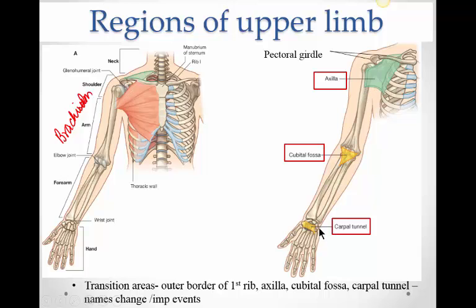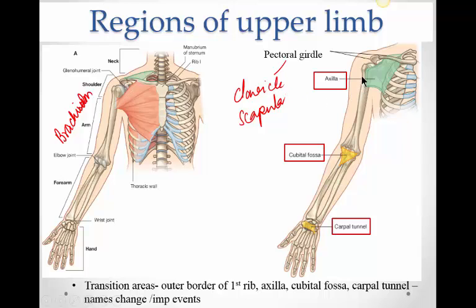The skeleton of the upper limb, called the appendicular skeleton, is attached to the axial skeleton — the central skeleton that includes your skull, vertebral column, rib cage, and bony pelvis. This appendicular skeleton is attached to the axial skeleton by a girdle known as the pectoral girdle, made up of the clavicle and the scapula. The clavicle is like a strut connecting the appendicular to the axial skeleton.